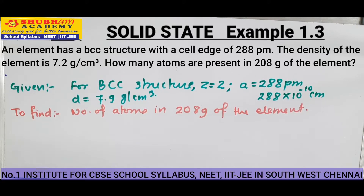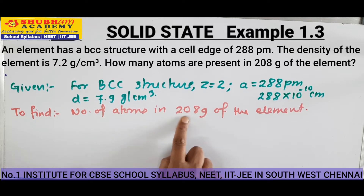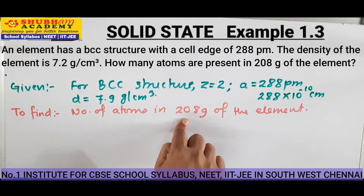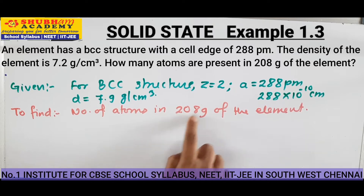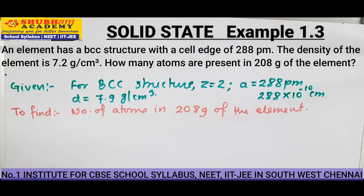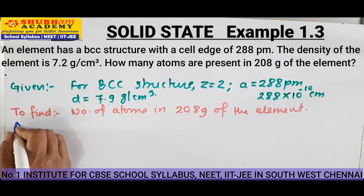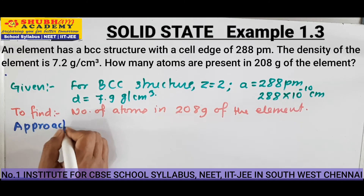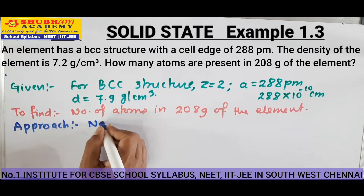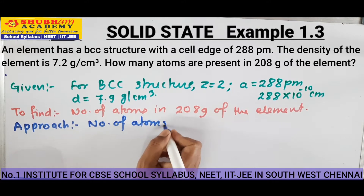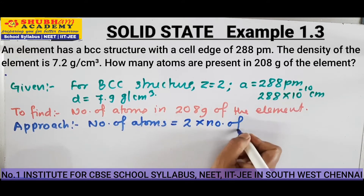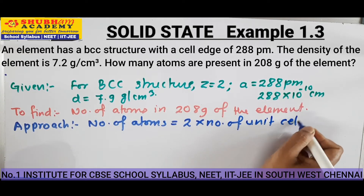What should be the approach for this question? In BCC, the number of atoms per unit cell is 2. So if we are able to find the number of unit cells in 208 gram of the element, and multiply that with 2, we will get the number of atoms. The approach is: number of atoms equals 2 into number of unit cells.